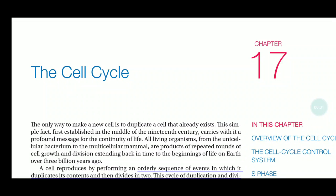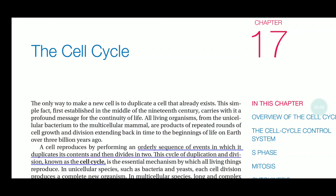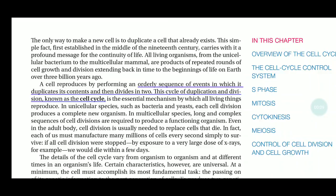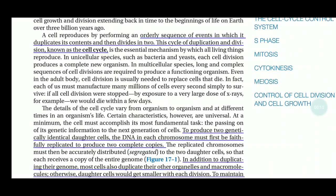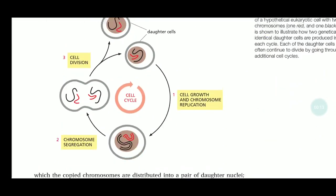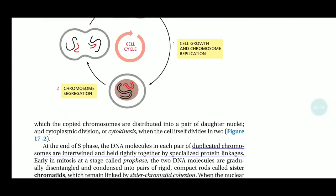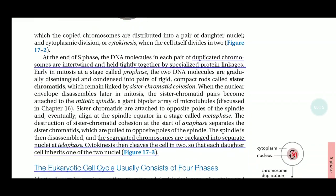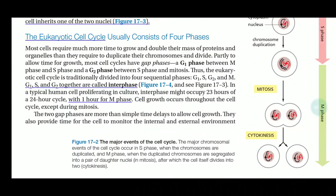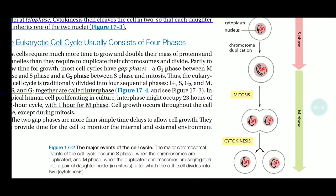Hello everyone. The topic is cell cycle. The book is Bruce Alberts, and I am going to discuss only the important topics. The cell cycle definition: as you know, there is a division of cells from mother cells. This shows the cell cycle with different phases.